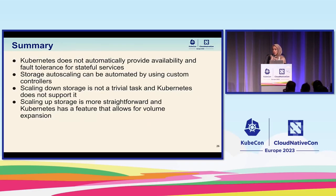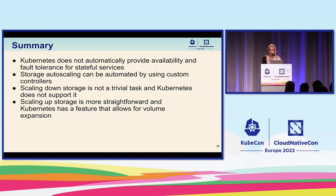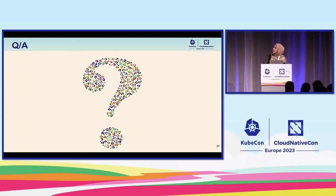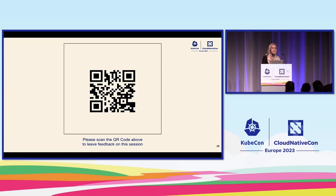To summarize: we learned today that Kubernetes does not automatically provide availability and fault tolerance for stateful services — it's up to the application to implement data replication. Storage autoscaling can be automated by using custom controllers. We saw that scaling down storage is not a trivial task, Kubernetes does not support it natively, and it should be implemented with care to avoid data loss. And lastly, scaling up storage is more straightforward thanks to a Kubernetes feature that allows volume expansion. Thank you for coming, and if you have any questions or feedback, I'll be here.